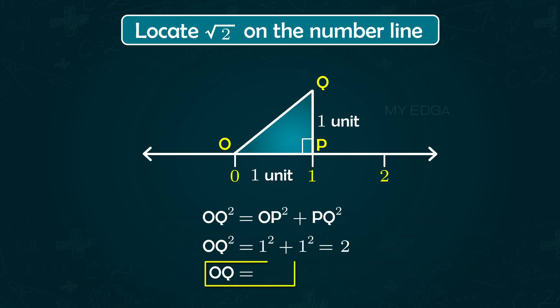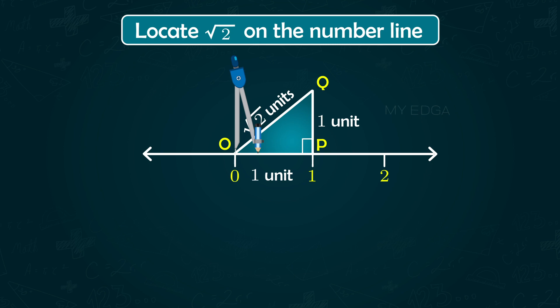Next, using a compass with center O and radius OQ, draw an arc intersecting the number line at the point R. This point R corresponds to the hypotenuse √2 on the number line.